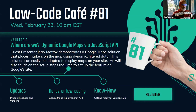Hello everyone, and welcome to another edition of the Low-Code Cafe, number 81, for February 23rd. We have a great lineup today. Guest presenter Jerry Maddox is going to show a solution with Google Maps. We took a look at it yesterday, and I really think this is something you'll be able to use and easily implement into your projects.